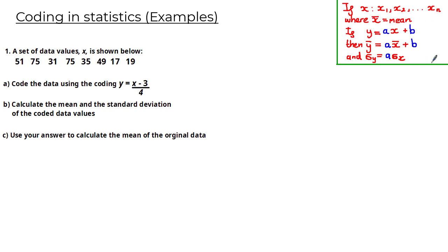I'll keep this result here for your reference, but instead of memorizing this, it would be easier to remember that the mean of coded data is affected by any of the main operators inside the coding equation — that's addition, subtraction, multiplication, or division — whereas the standard deviation of coded data is only affected by multiplication or division.